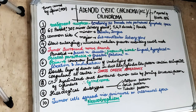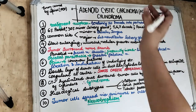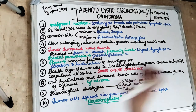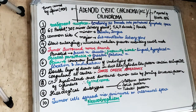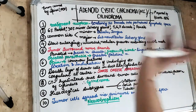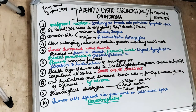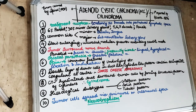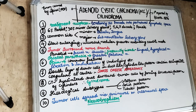As the name suggests — carcinoma — this is going to be a malignant neoplasm. The Adenoid Cystic Carcinoma, also known as Cylindroma, was first reported by Billroth in 1856 and was termed Adenoid Cystic Carcinoma by Spies in 1930.